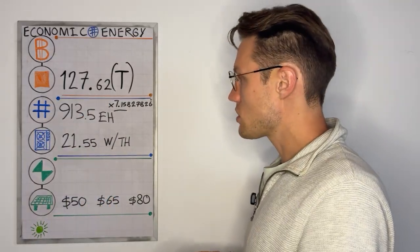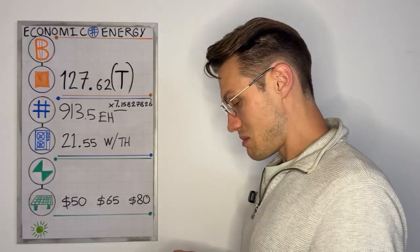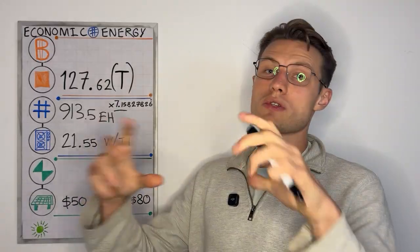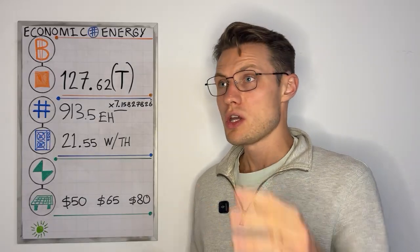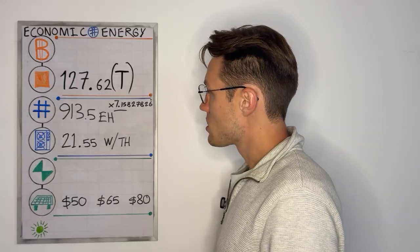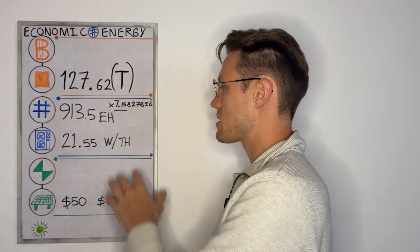Now, that is a lot of compute power. That's making the Bitcoin network more secure than if you coordinated all of the supercomputers of the world to try and interrupt this very secure financial ledger. So 913.5 exahash.